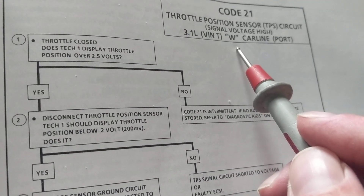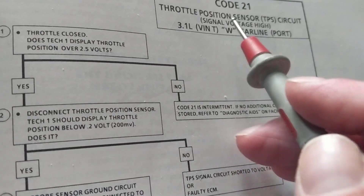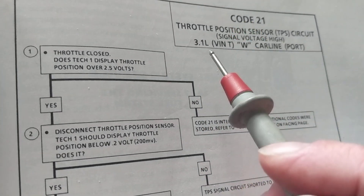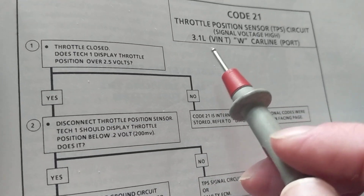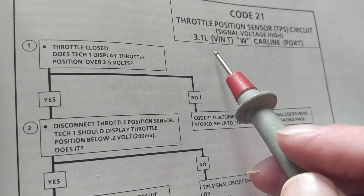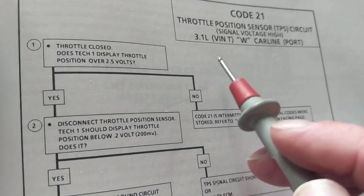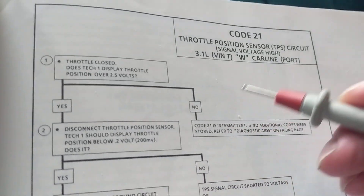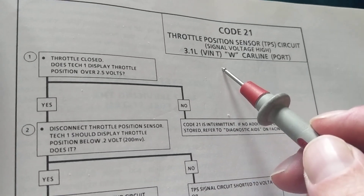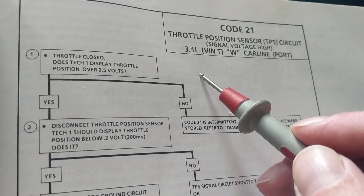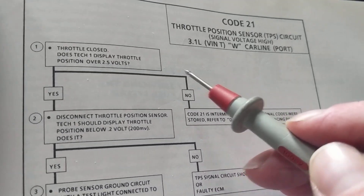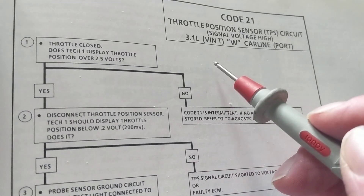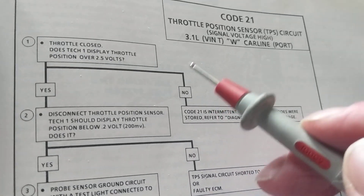You get the code, it tells you 'oxygen sensor,' and the first thing that comes to mind is: I've got to replace it. So you go to AutoZone, ask the cashier — 'Do you have an oxygen sensor for a 2005 Toyota Camry?' The seller says, 'Sure, we have it in stock, we sell a lot of those.' Right away, he caught you. That line — 'we sell a lot of those' — puts confidence in your assumption that the sensor is the problem.